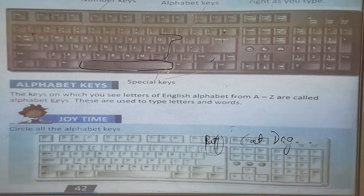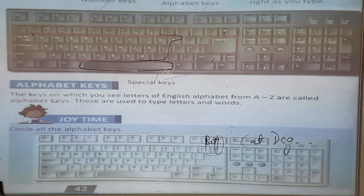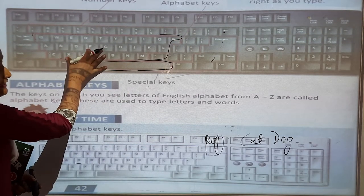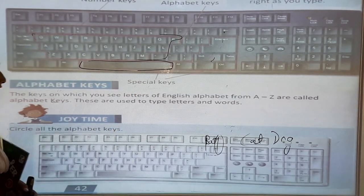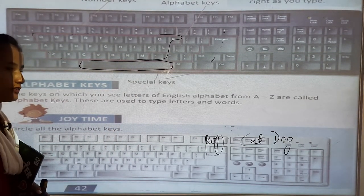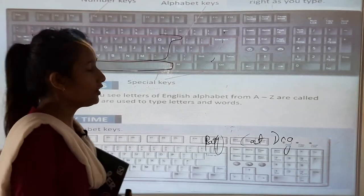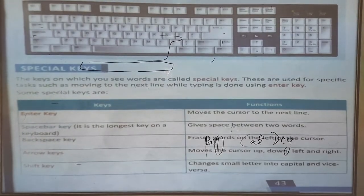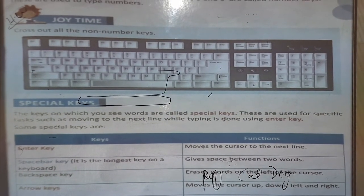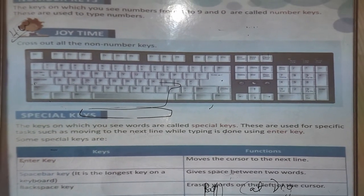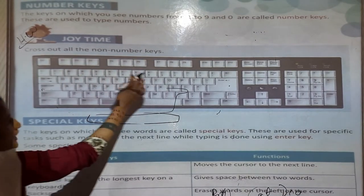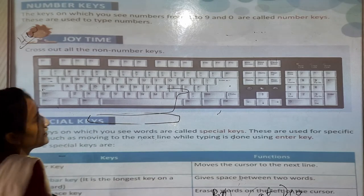Now, alphabet key: the keys on which you see letters of the English alphabet from A to Z are called alphabet keys. These are used to type letters and words. Next, number key: the keys on which you see numbers from 1 to 9 and 0 are called number keys. These are used to type numbers.